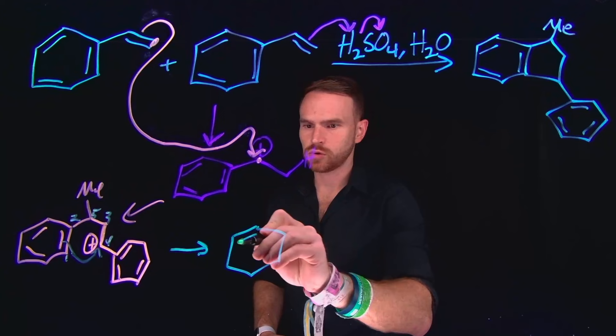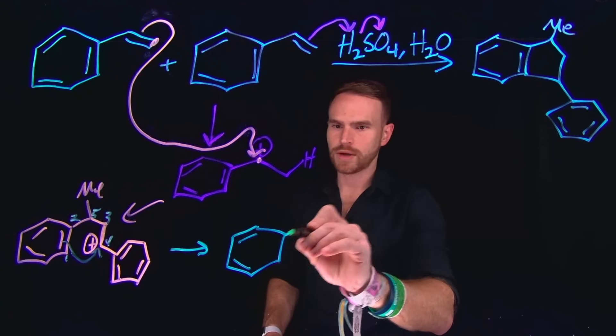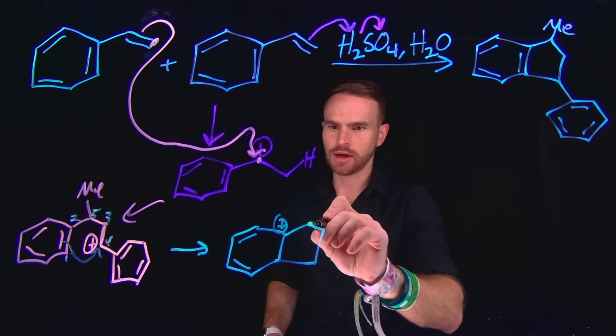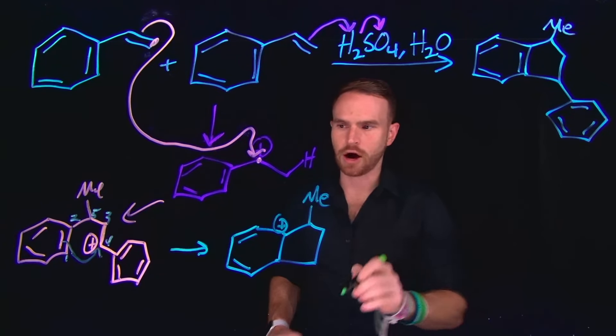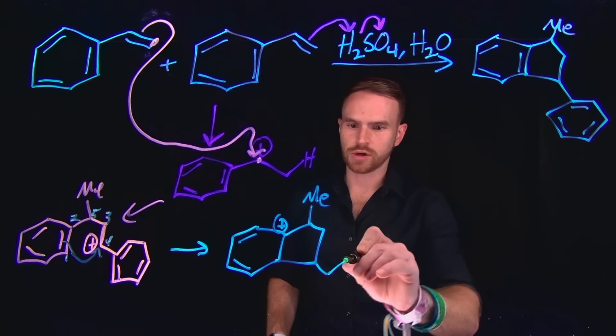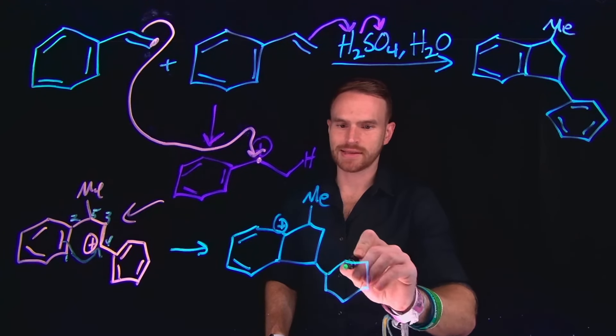...remember, we are still left with our two alkenes on this side, we have our new five-membered ring with a carbocation at this position, our methyl group is still pointing upwards, and this benzene is still present from position four, which is going to give us our benzene at this location.